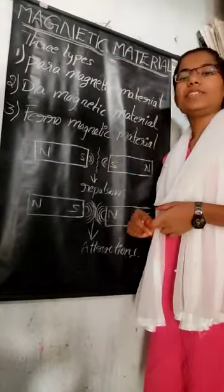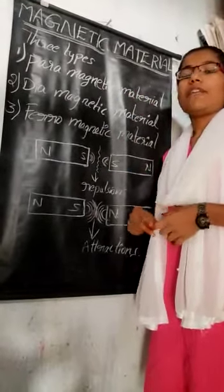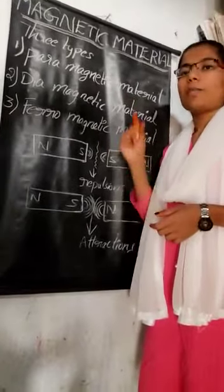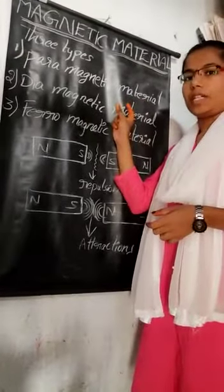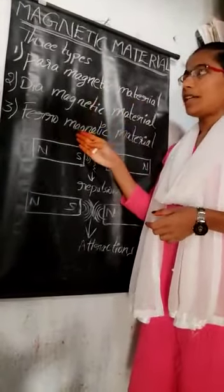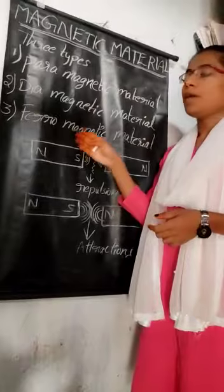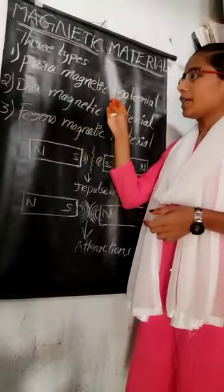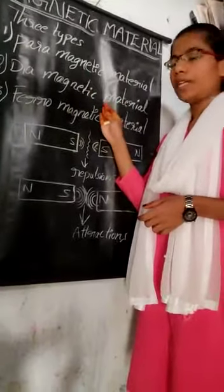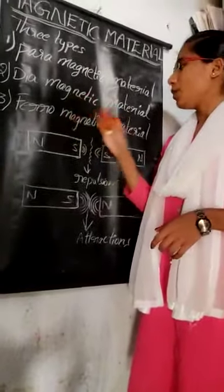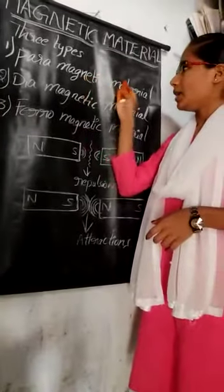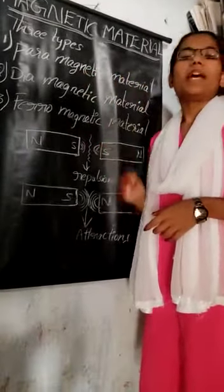The material which is affected by a magnet is called magnetic material. There are three types of magnetic material: paramagnetic material, diamagnetic material, and ferromagnetic material. First one, paramagnetic material.